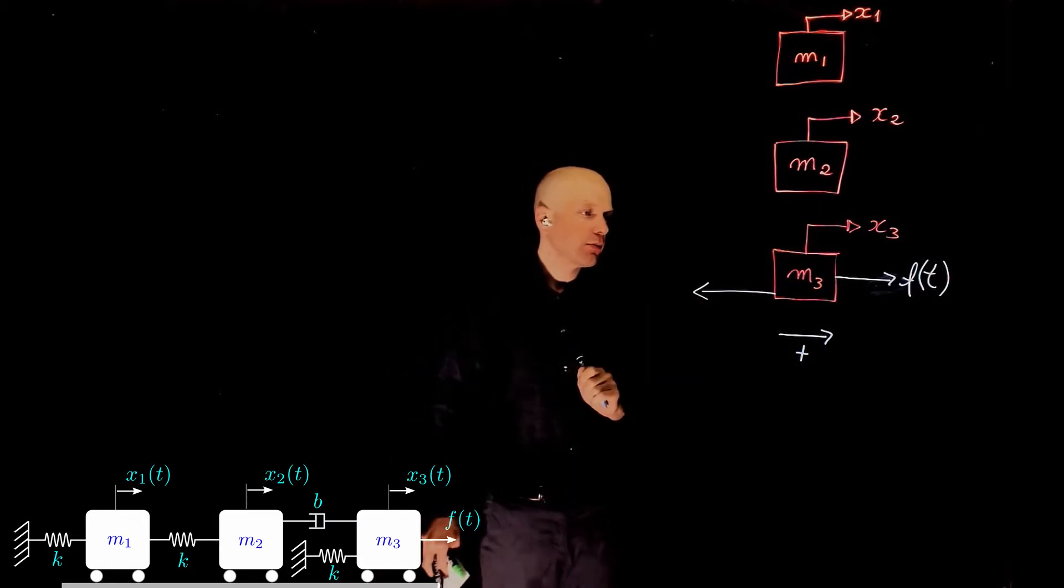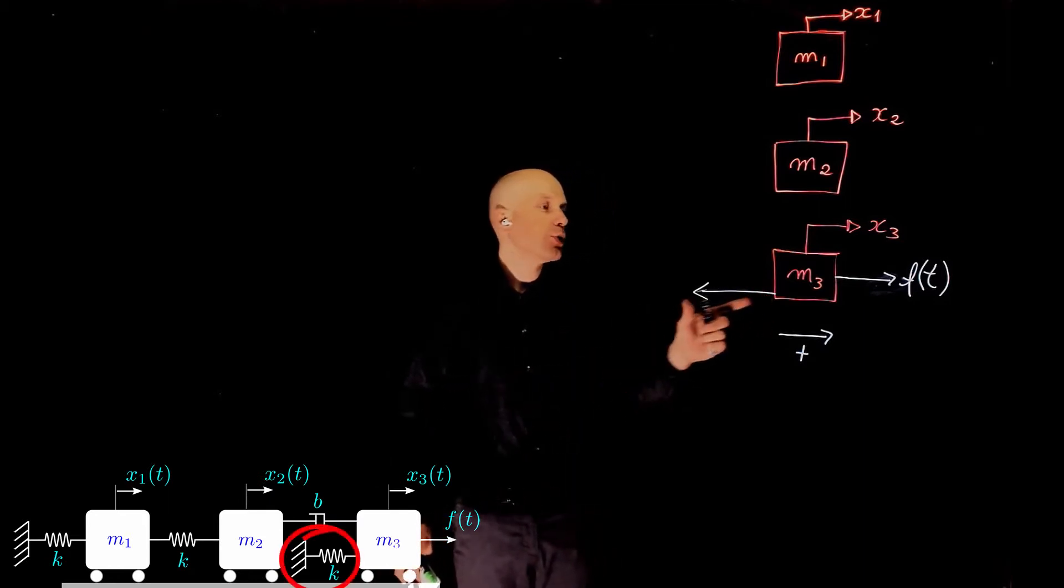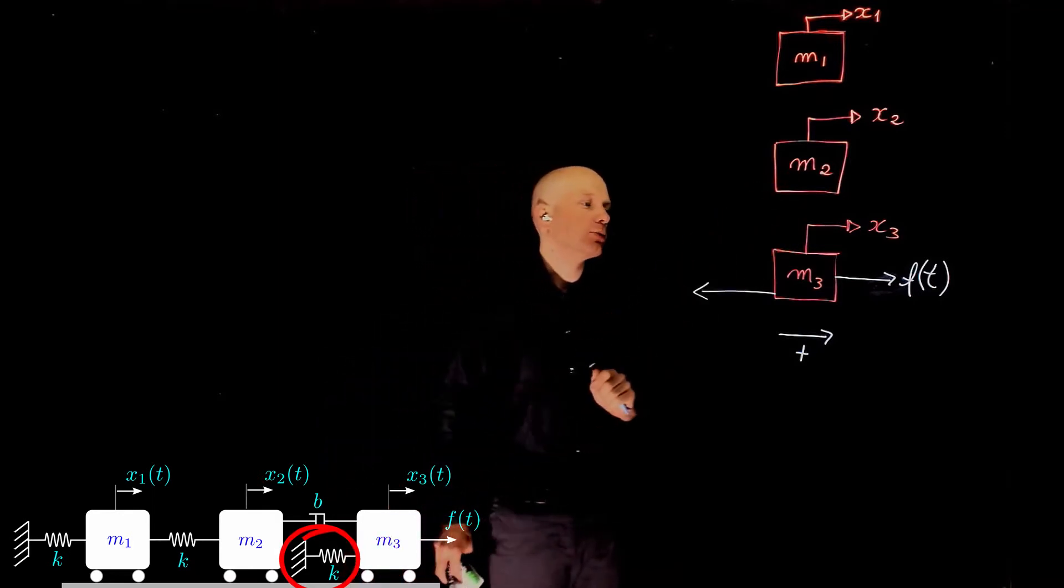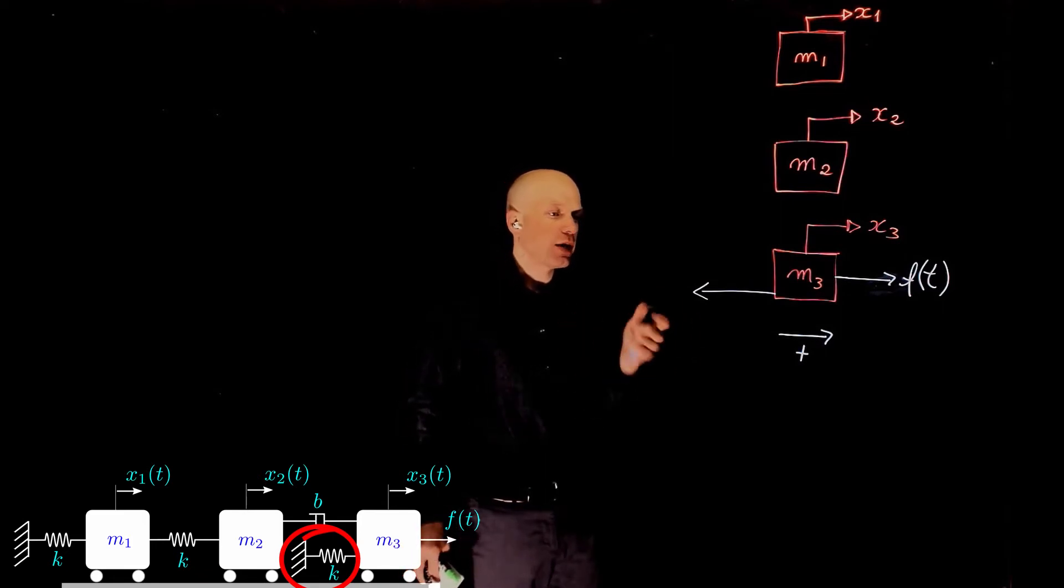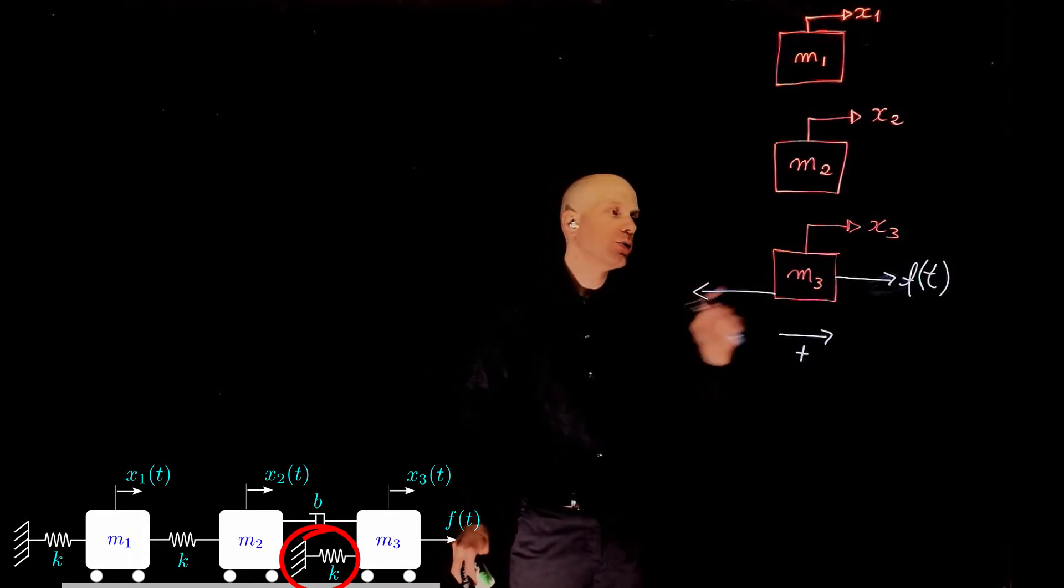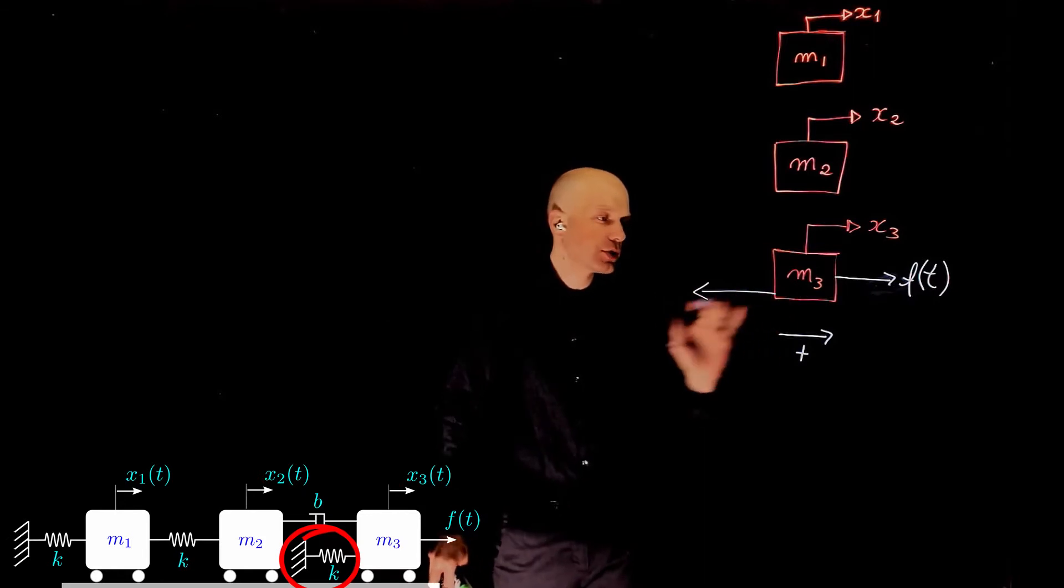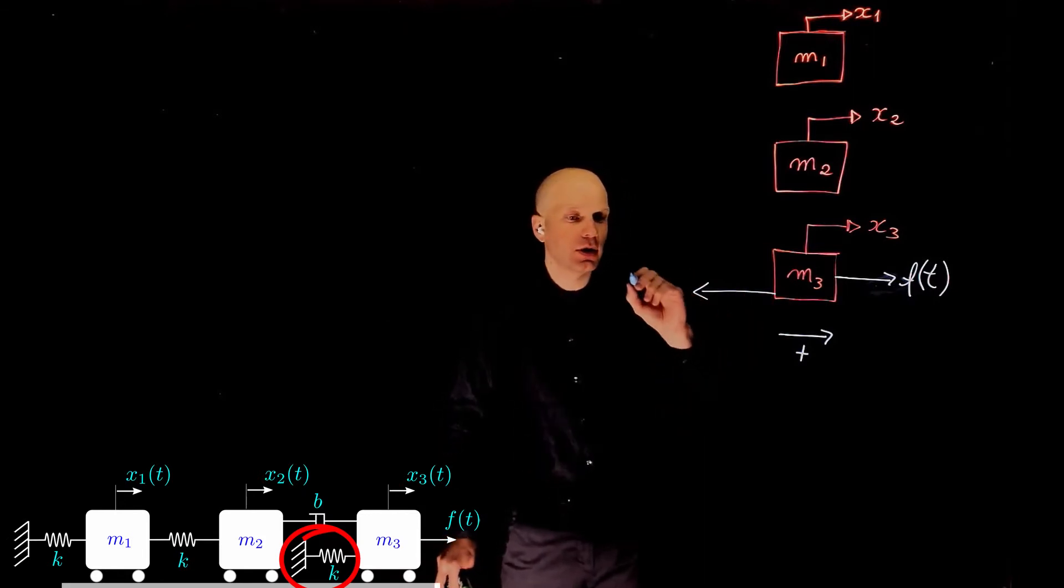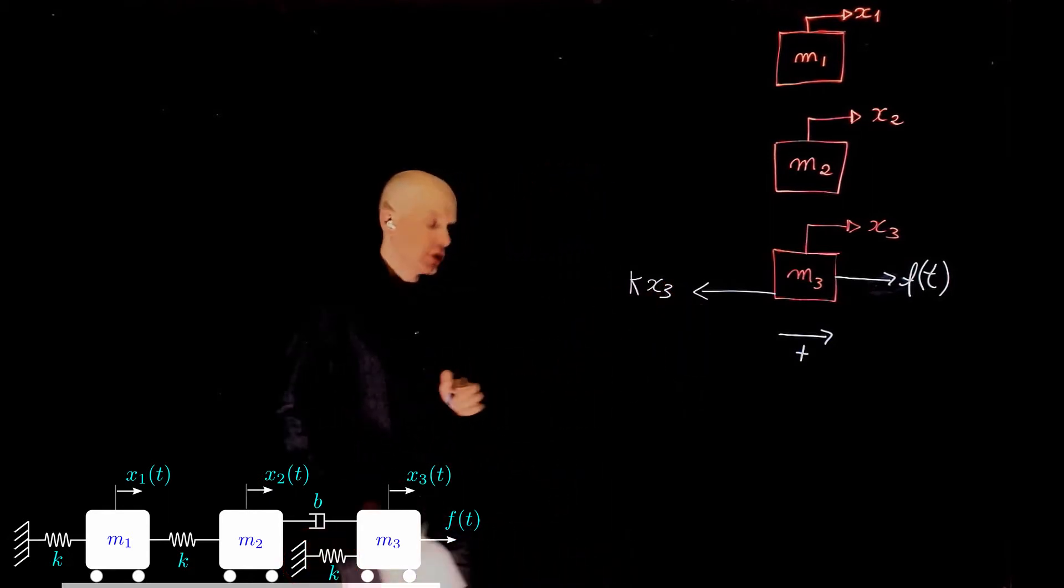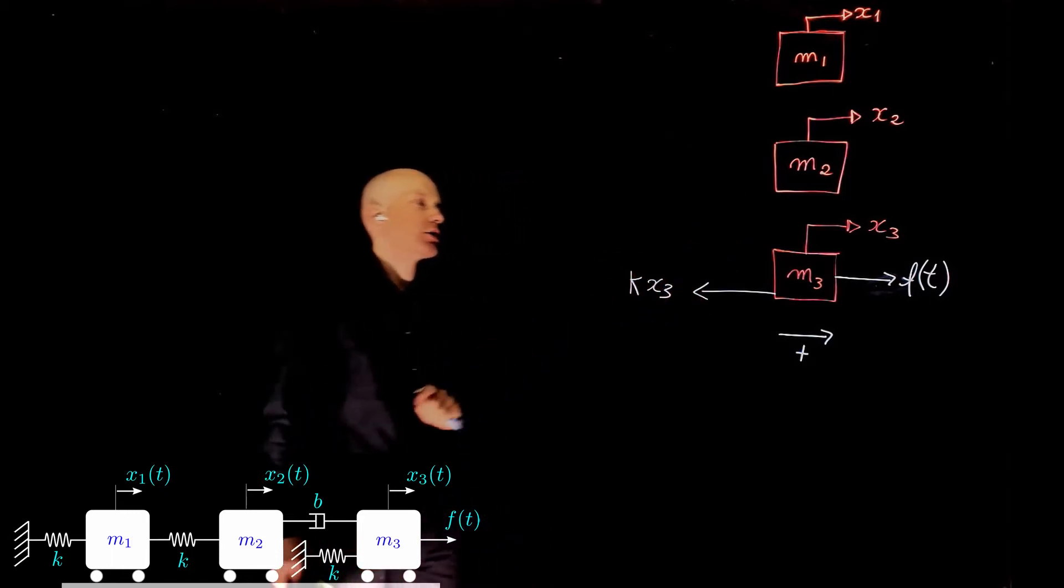The first force here is very easy to calculate. We have a spring and the spring is connected to a fixed frame, it is not connected to m2. So the absolute displacement of the spring k3 is simply x3. On the other end it's fixed, it doesn't move. So the force that resists motion here is k x3. In this exercise k doesn't have an index, so we're assuming that all k's are the same.